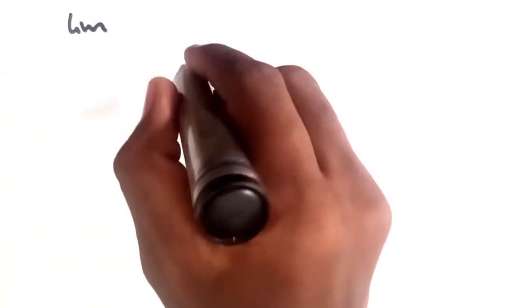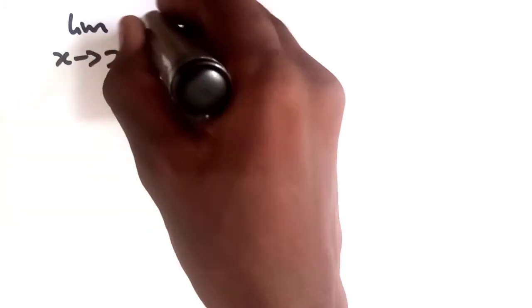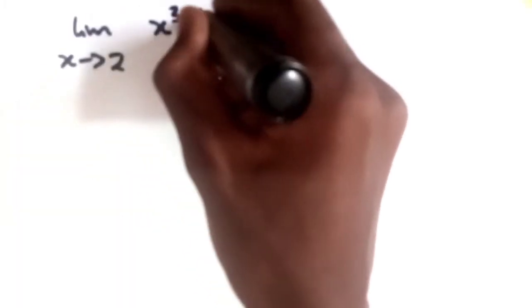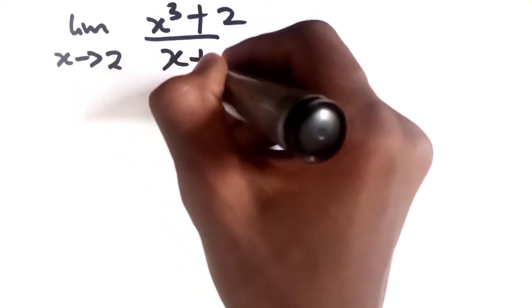So let's get started. We have a question: limit as x tends to 2 of x raised to the power of 3 plus 2 over x plus 1.